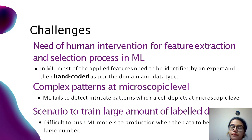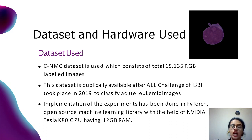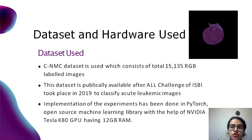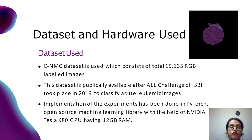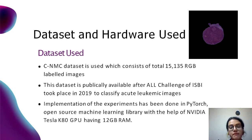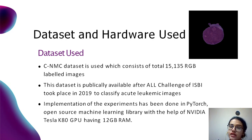The third challenge was the scenario where we have huge amounts of data and machine learning models fail to classify them. For experimentation, the CNMC dataset was used, which consists of around 15,000 images and is part of the ISBI 2019 challenge. All experiments were implemented in PyTorch using a GPU with 12 GB RAM.